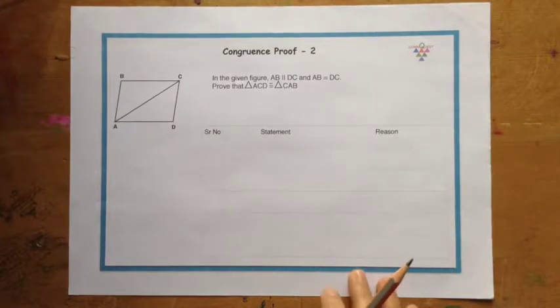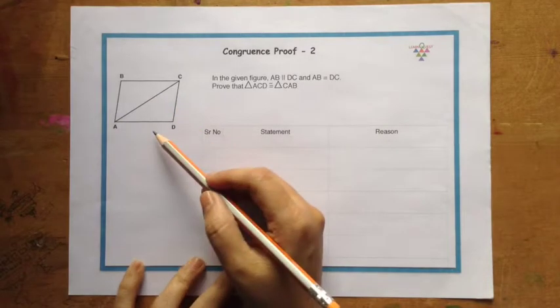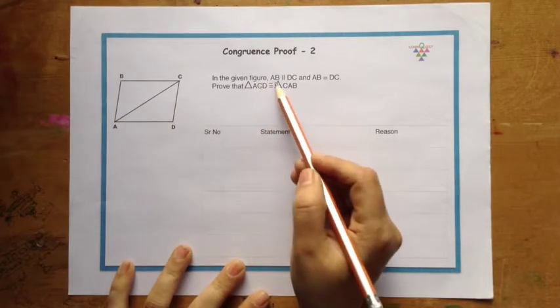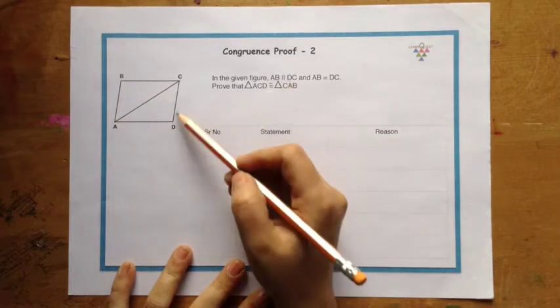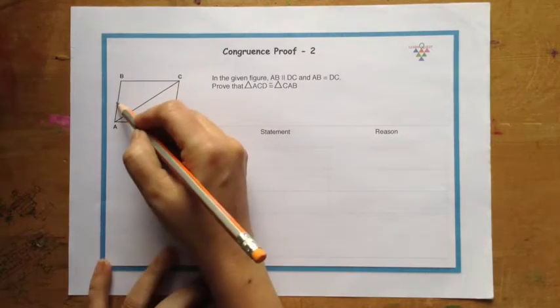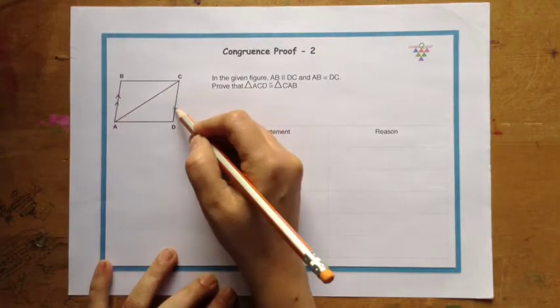In this problem, we are given a figure where AB is parallel to DC. So let us immediately mark it out so that it helps us in solving the problem.